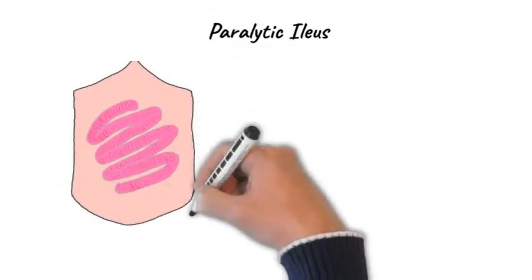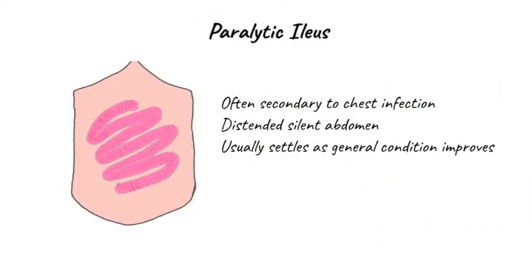When patients have a chest infection after an AAA repair, they are predisposed to develop a paralytic ileus. You may be called to see one of these patients post-operatively because they have developed abdominal distension. Typically the abdomen is soft and non-tender on examination, and you can hear no bowel sounds because the small bowel has ceased to function. As a rule, the paralytic ileus will settle as the general condition of the patient improves and as their chest infection resolves.